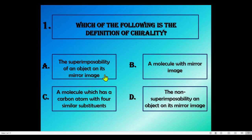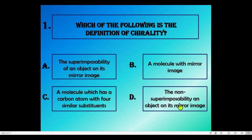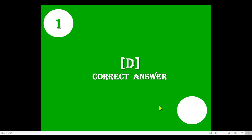Chirality means a compound which has a carbon surrounded by four different substituents and it has a mirror image. Among the options, superimposability is not a criterion, mirror image alone is not a criterion, and four similar substituents is not a criterion for a chiral compound. So chirality means non-superimposability of an object on its mirror image — option D is the correct answer.